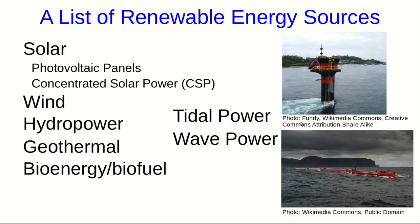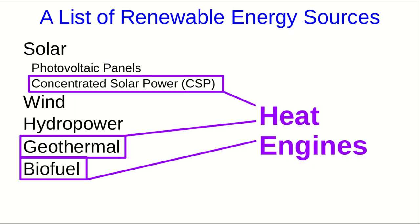One other thing worth pointing out is that several of these operate in basically the same way as power sources we've already seen. Concentrated solar, geothermal, and biofuel all rely on using some source of energy to heat a liquid and then run a heat engine. So they work pretty much just like fossil fuel plants, except that the source used to heat the fluid is not the burning of a fossil fuel.